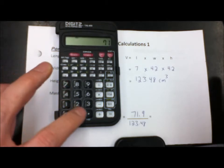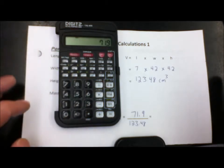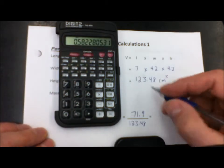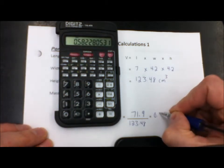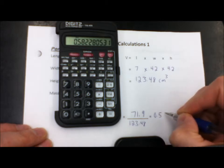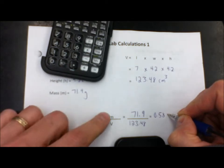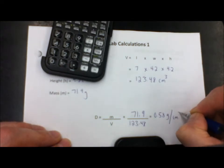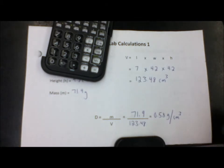So 71.9 divided by 123.48. And that gives us an answer—we're going to round it to two decimal places—0.58. And that's mass over volume, so that's grams per centimeter cubed. So that's the density of our wood.